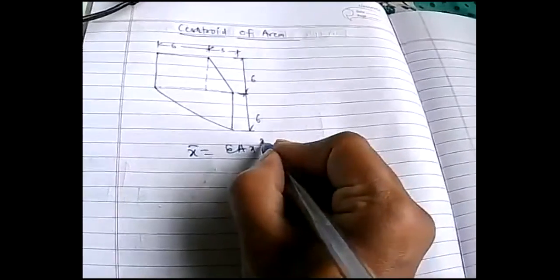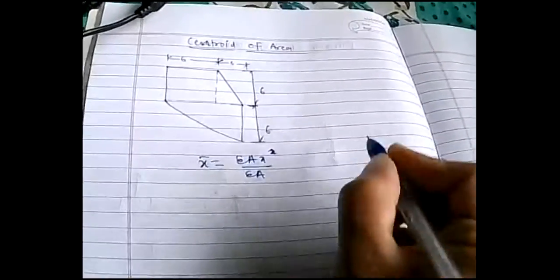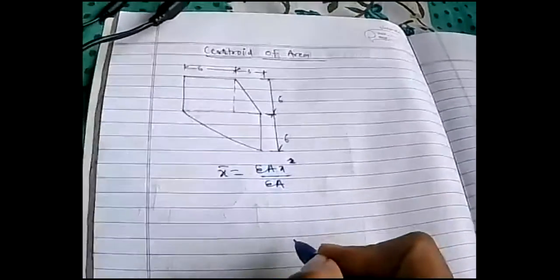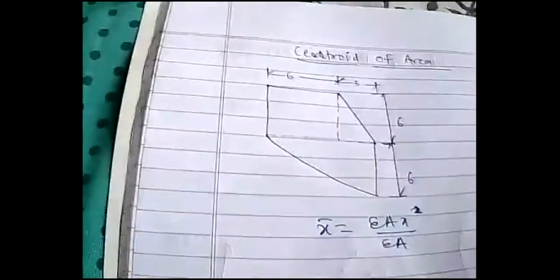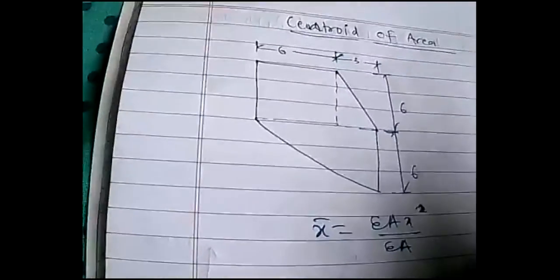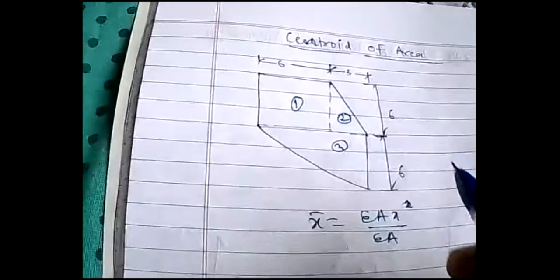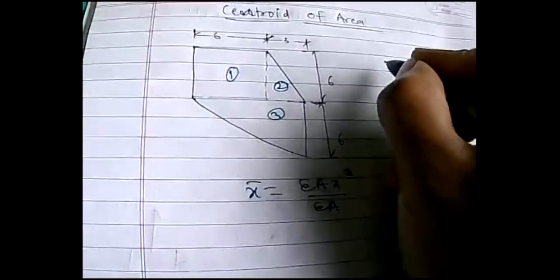Similarly for ȳ: ȳ = summation of (A·y) divided by summation of A. As I told you, we'll divide the entire composite diagram into standard sections. This diagram has a first rectangle, a second rectangle, a right-angle triangle, and a third section which is again a right-angle triangle.